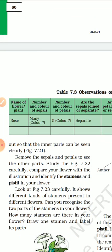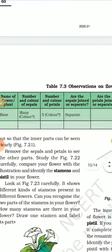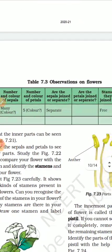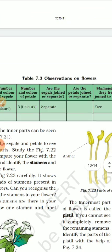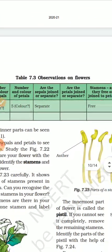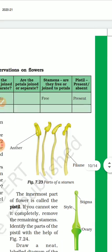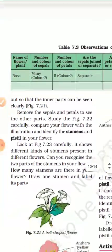The table includes: the name of the flower, the number of colors in sepals. How many colors are there? Separate, free, present, and pistil — present or not. So you will keep these observations.